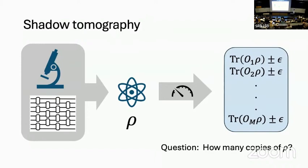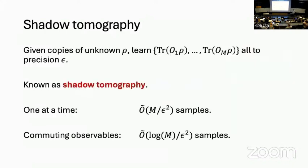You can think of these quantum states as expensive — maybe you need a quantum algorithm to prepare them, or you need to perform some experiment to prepare a single copy. So we'd like to minimize the number of copies needed. One trivial way is to measure one observable at a time: each one requires 1/ε² samples to get to precision epsilon, giving M/ε² scaling — linear in the number of observables.